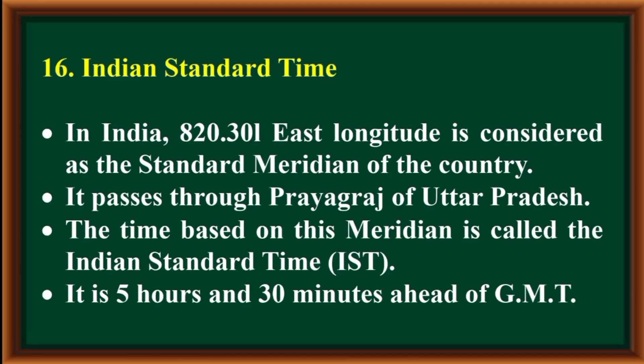Indian Standard Time: in India, 82.30 degrees east longitude is considered as the standard meridian of the country. It passes through Prayagraj in Uttar Pradesh. The time based on this meridian is called the Indian Standard Time (IST). It is 5 hours and 30 minutes ahead of GMT (Greenwich Mean Time).